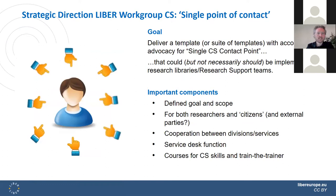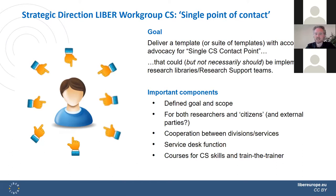At our own LIBER work group for citizen science, we have created a strategic direction called 'Infrastructures,' which I personally call the single point of contact. The goal of this strategic direction is to deliver a template or suite of templates with accompanying advocacy for a single citizen science contact point that could — but not necessarily should — be implemented in research libraries and/or research support teams.